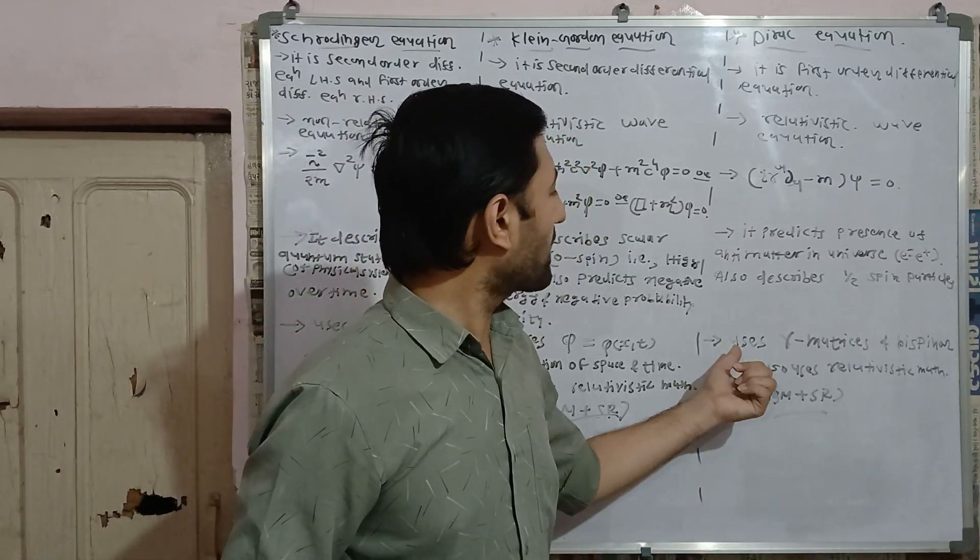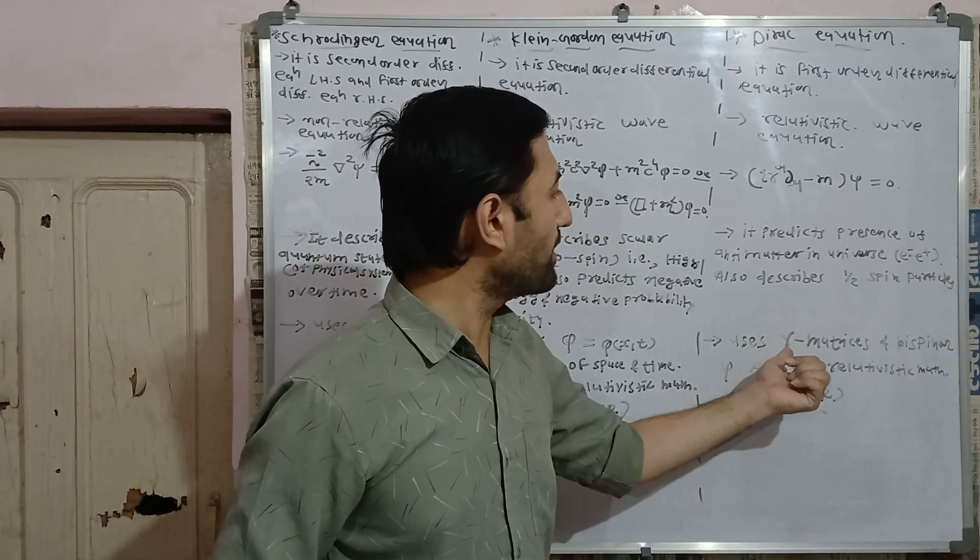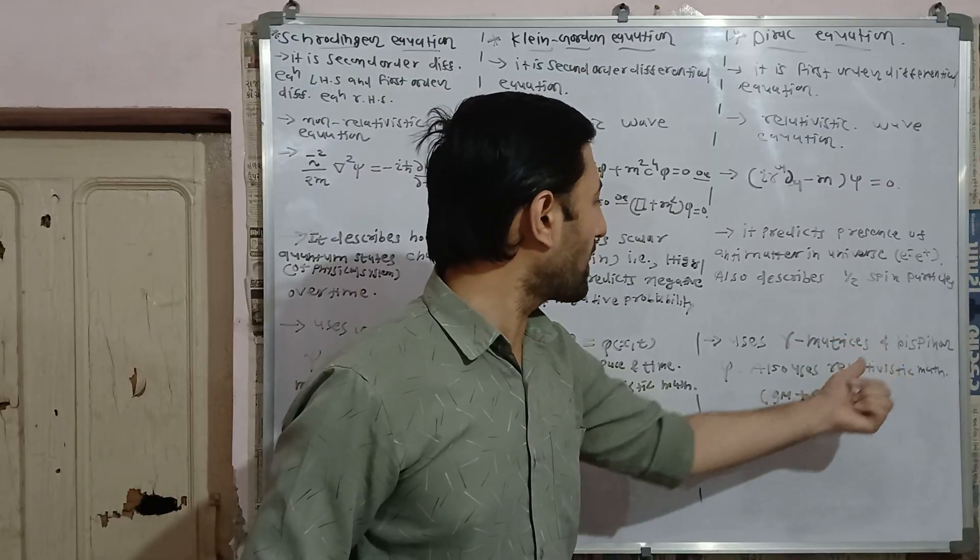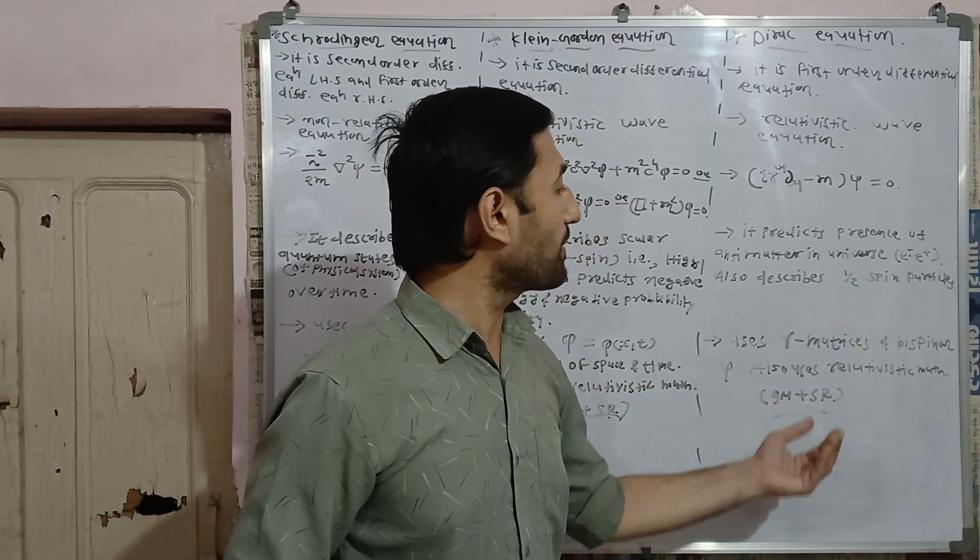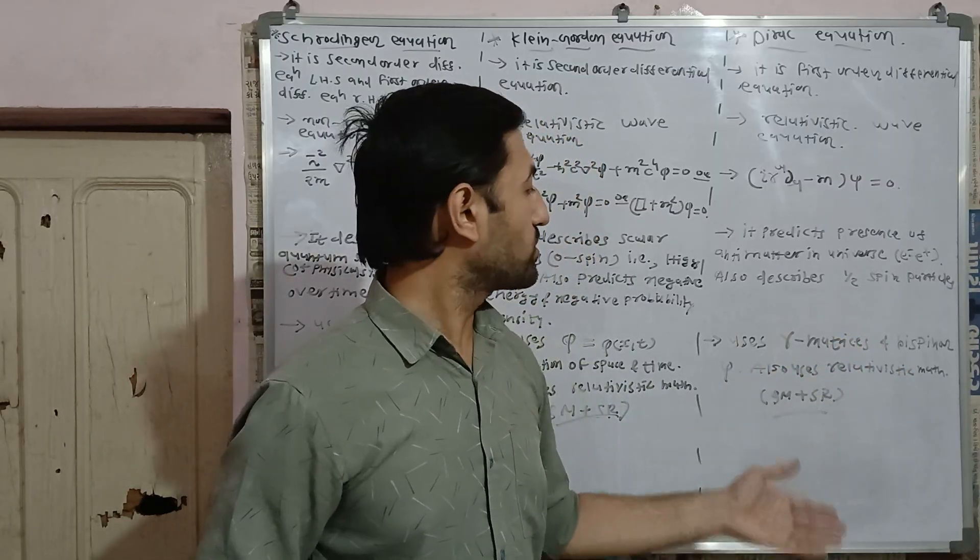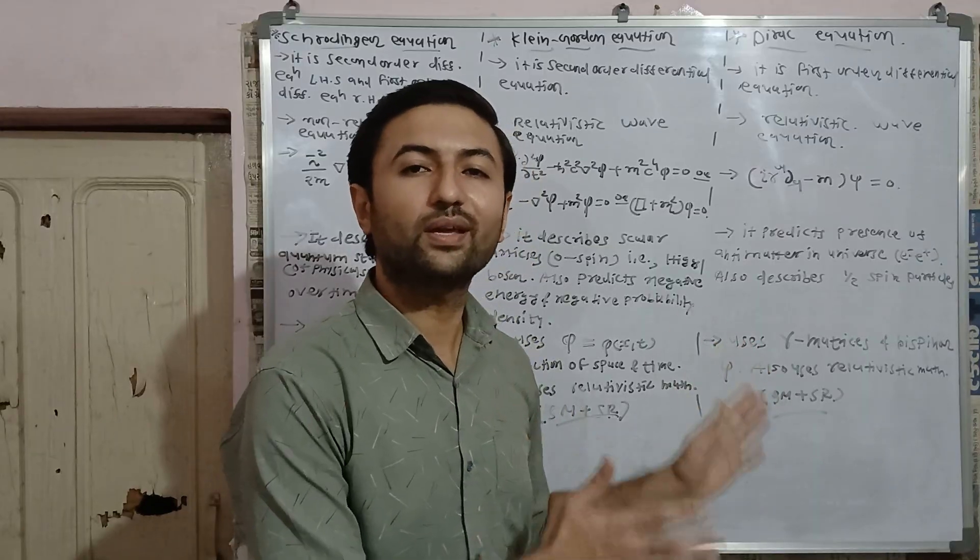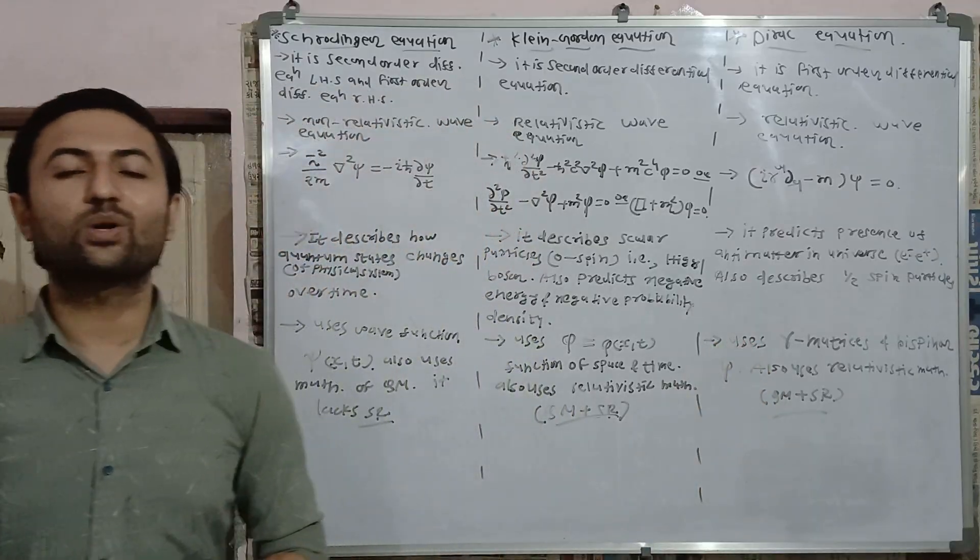Similarly, Dirac equation uses gamma matrix, bispinor. It also uses mathematics of relativity, so it is also equation of quantum field theory. Thanks for listening and watching.